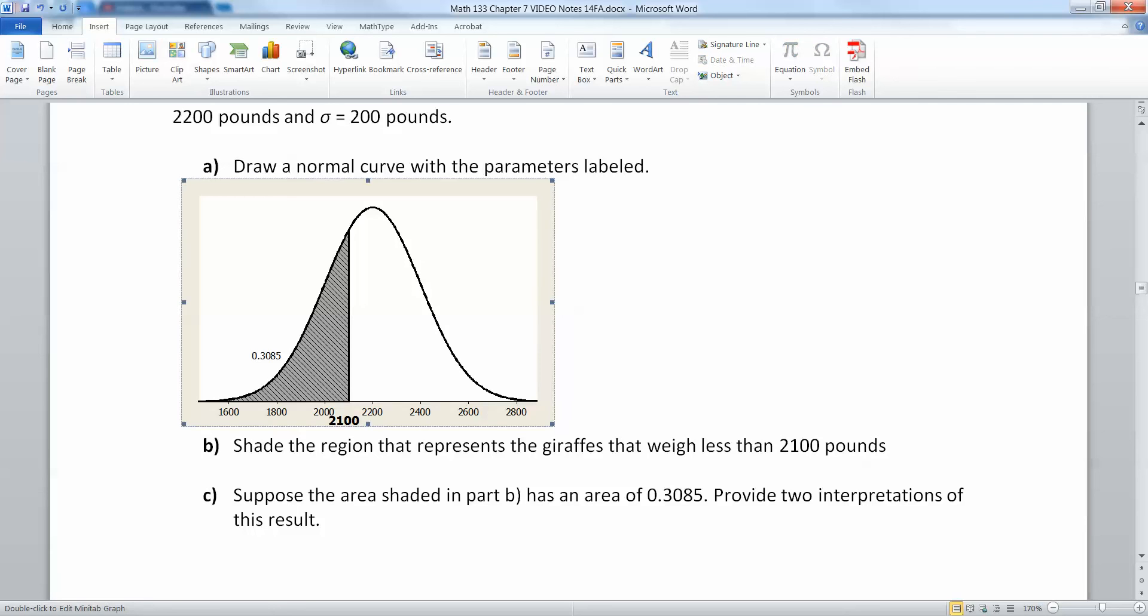So I have a normal curve with the parameters labeled, 2200 in the middle, then I have my standard deviations marked off evenly spaced. You keep adding 200 to get to these numbers: 2400, 2600, 2800, then you subtract away 200 and get all the other numbers. You get a few standard deviations in there.